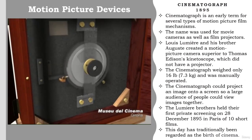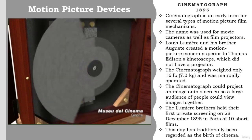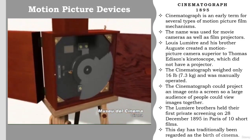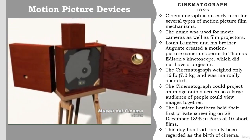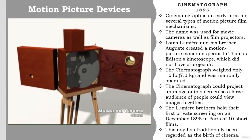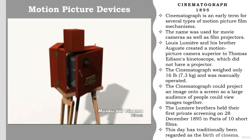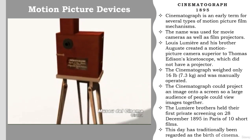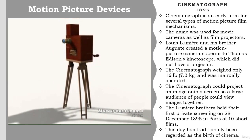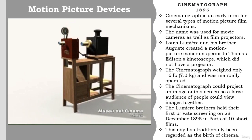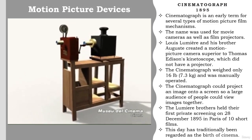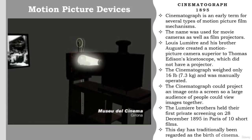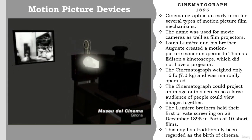The cinematograph, or kinematograph, is an early term for several types of motion picture film mechanisms, used for movie cameras as well as film projectors. Louis Lumière and his brother Auguste worked together to create a motion picture camera superior to Thomas Edison's kinetoscope, which did not have a projector. The cinematograph weighed only 16 pounds and was manually operated. Most importantly, while only one person at a time could use Edison's kinetoscope for viewing, the cinematograph could project an image onto a screen so a large audience could view images together. The Lumière brothers held their first private screening on 28 December 1895 in Paris of ten short films — this day has traditionally been regarded as the birth of cinema.